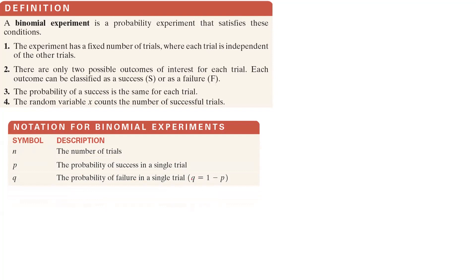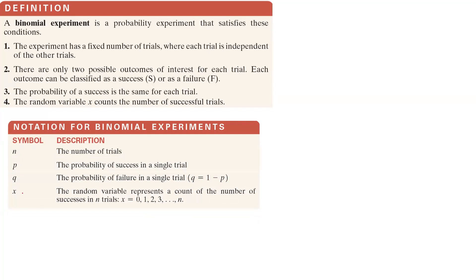Q is the probability of failure in a single trial. To find Q, we use the formula Q equals 1 minus P. So if the probability of success is 90%, then Q, the probability of failure, is 10%. Finally, X is a discrete random variable that counts the number of successes in n trials — ranging from 0 up to n.